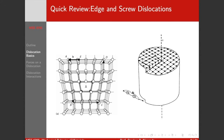We can quantify this dislocation by considering a closure failure of what's called a Burgers circuit. We pick a point and make a loop around this dislocation — going down four, to the right four, up four, to the left three — and lo and behold, we don't end up back where we started. We call this vector that describes the closure failure, from the end of our Burgers circuit to the start, the Burgers vector. This is one of the important ways of describing a dislocation. If we know the line direction and the Burgers vector, we know everything there is to know about a particular dislocation.